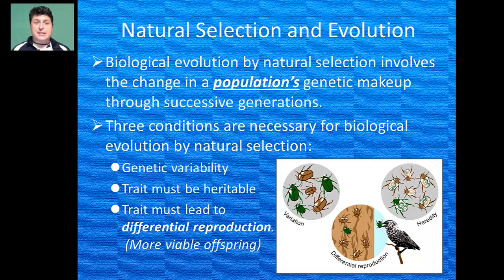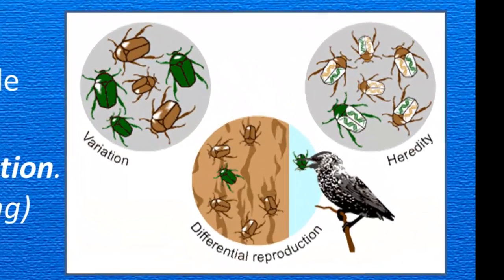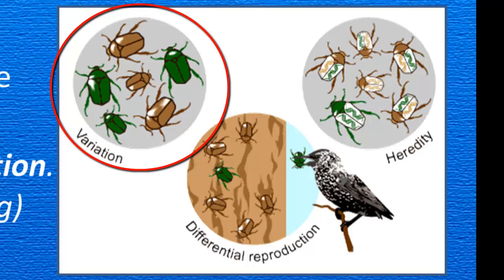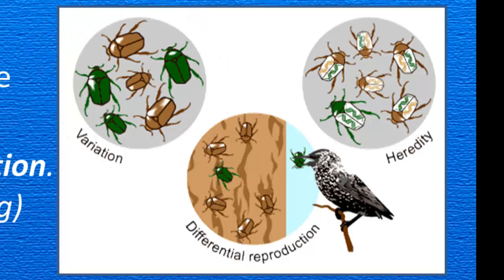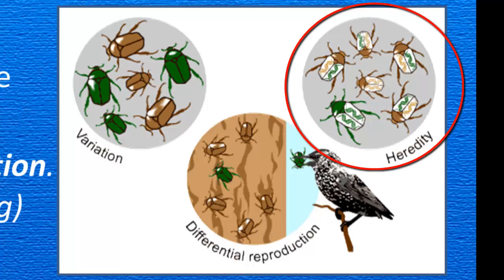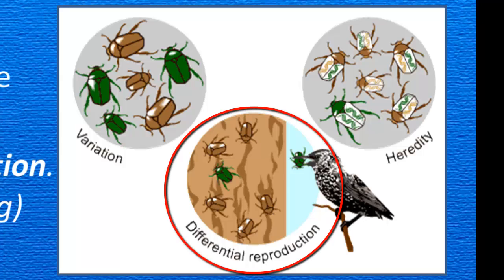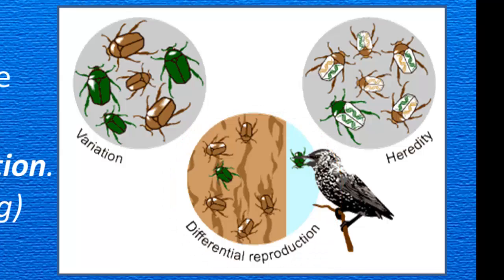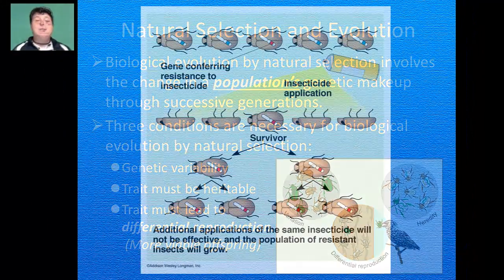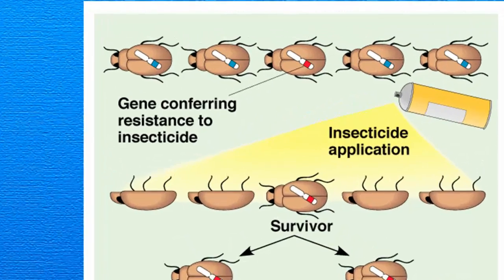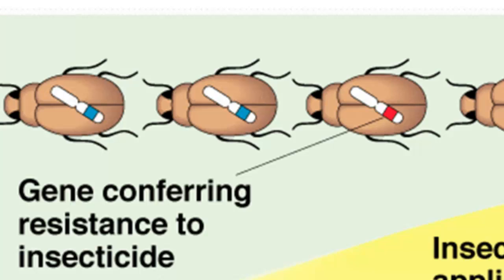There are three conditions necessary for biological evolution by natural selection. The first is genetic variation — within a population, there must be varieties. Those varieties must be based upon characteristics embedded in their traits which can be passed from parent to offspring. And finally, some of those variations must be favorable — that trait must lead to differential reproduction, or survival of the fittest. Here we have a population of insects in which there's variation in their genes which allows them to be either protected or not protected against an active ingredient of an insecticide.